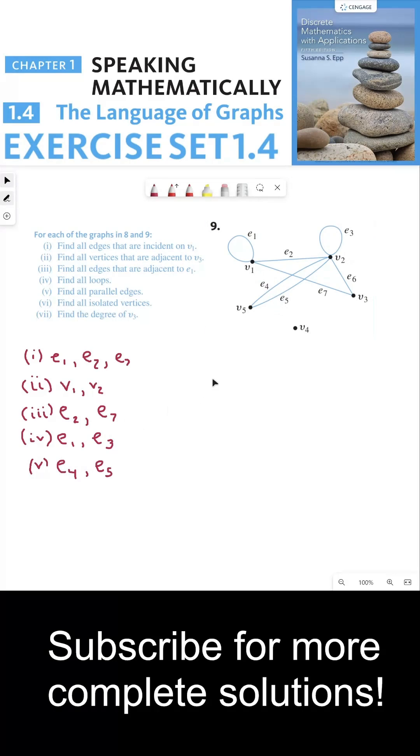So for part 6, we need to find all the isolated vertices. These are vertices that have no edges coming out of them. There's only one of those in this graph.